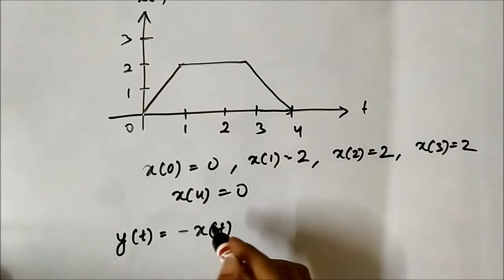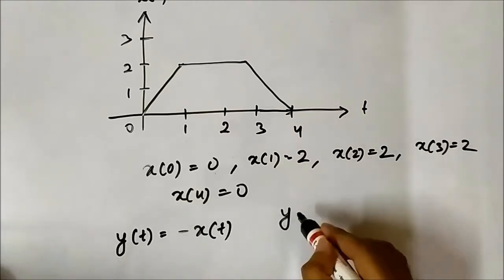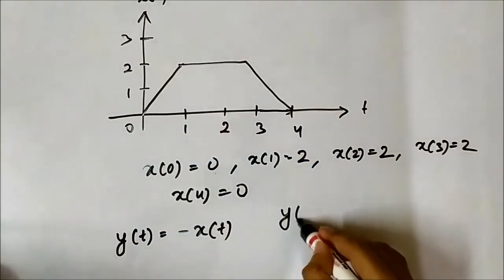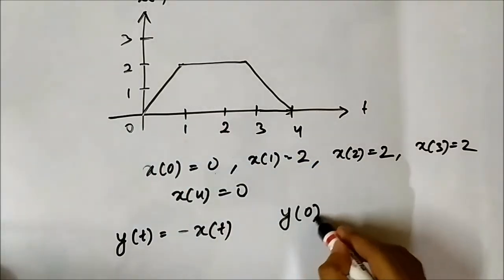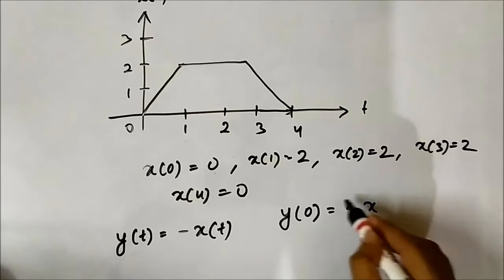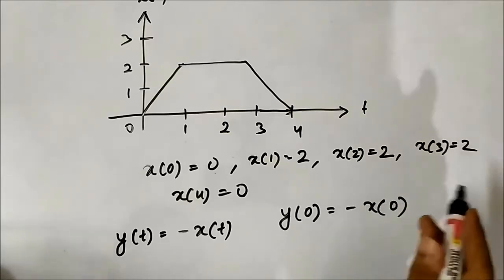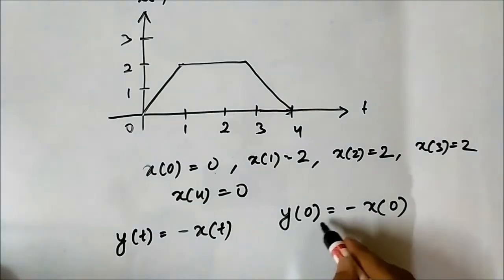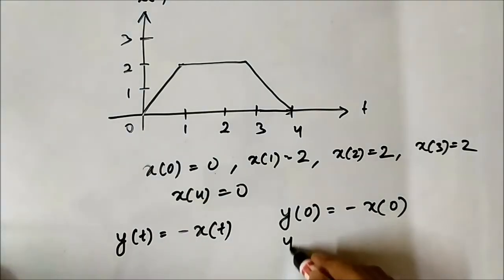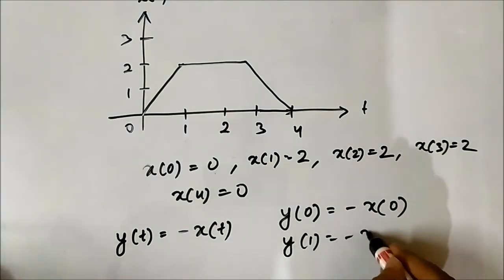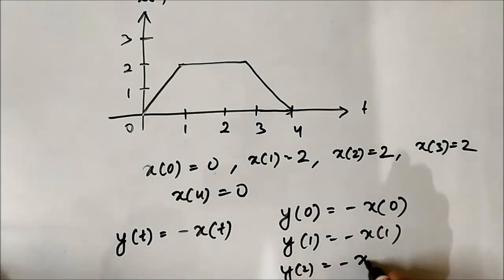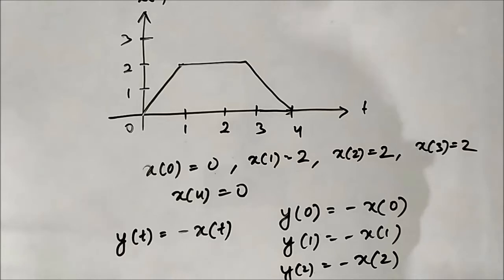If we have to perform amplitude inversion, it means y(t) = -x(t). The amplitudes at different instances of time will be the negative of the reference signal values at the same instant: y(0) = -x(0), y(1) = -x(1), y(2) = -x(2), and so on.